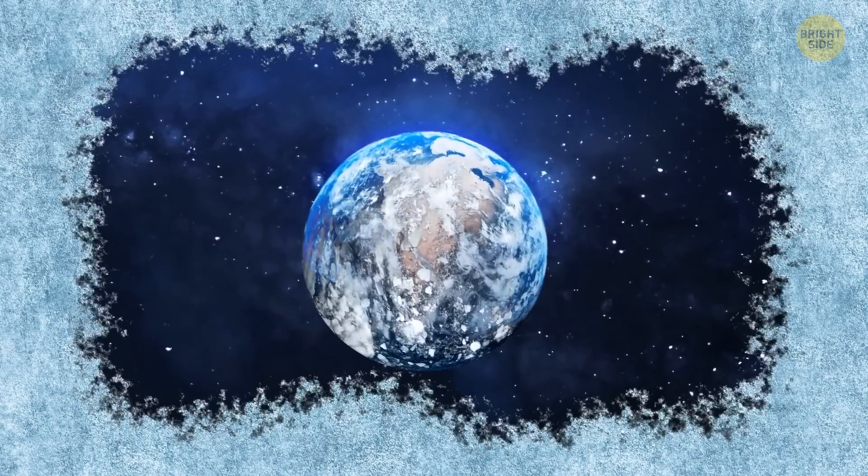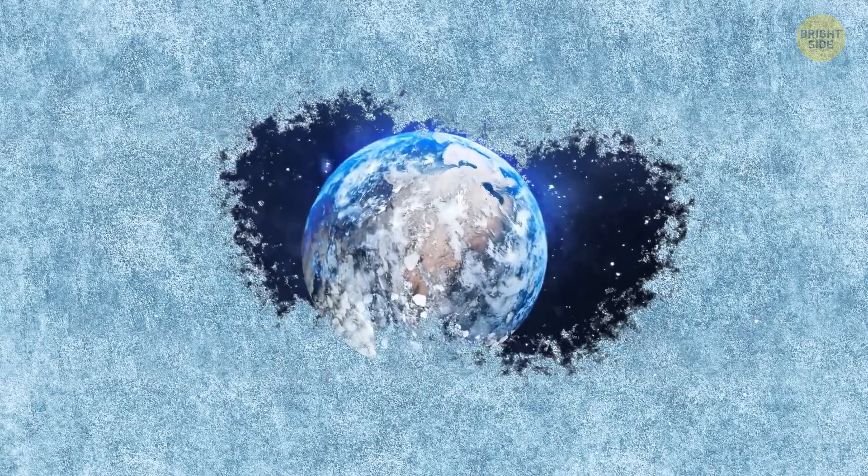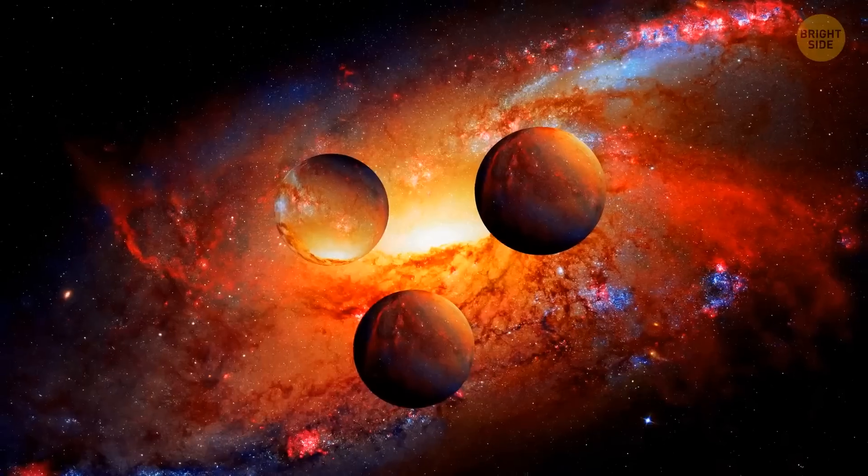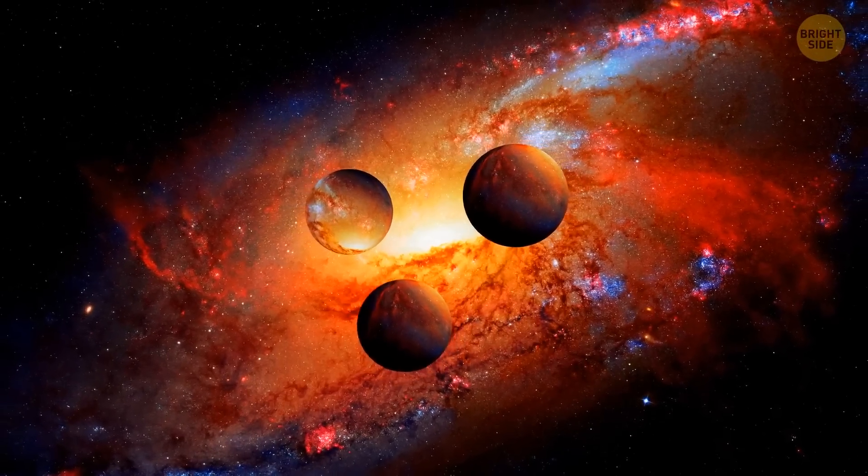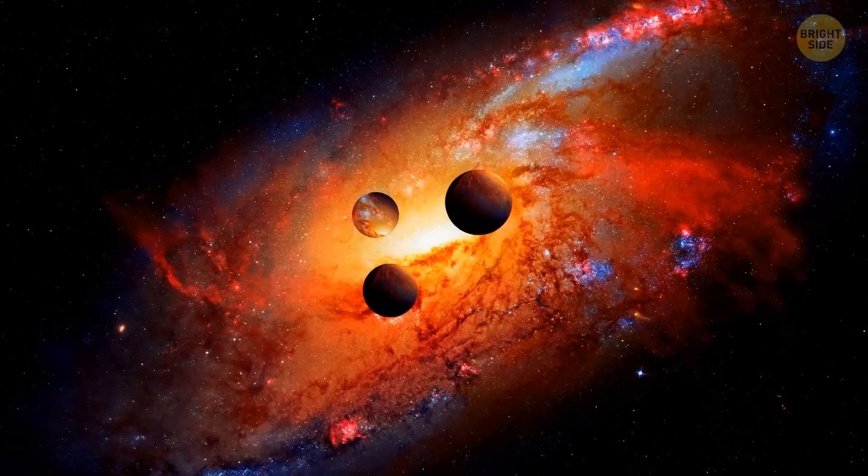Since Jupiter, as a dim red dwarf, wouldn't be able to warm us up well enough. But there could be one more option. The inner planets could get thrown out of the solar system altogether.